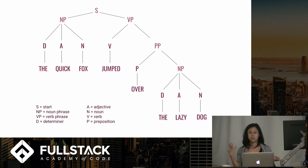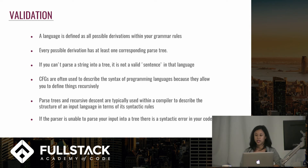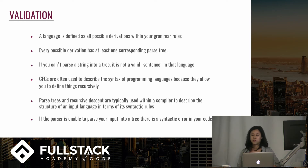Because of this, CFGs can yield an infinite number of derivations. So what is the point of having a grammar? In addition to using one to produce sentences, it can also define what sentences are valid. In a context-free grammar, language is defined as all the possible derivations under your production rules, and every possible derivation has at least one corresponding parse tree. CFGs, because they allow you to define things recursively, are often used as models to describe the syntax of programming languages. You might recall from CS that parse trees and recursive descent are typically used within a compiler to describe the structure of an input language in terms of its syntactic rules.